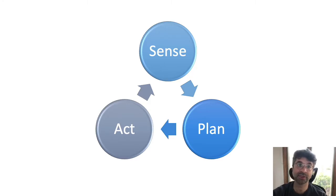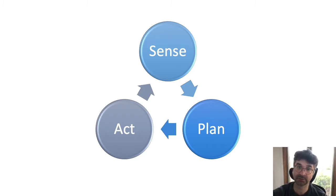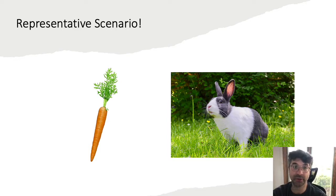To understand why agriculture is an amazing application domain for robotics, let's go back to the very basics. When robotics researchers design robotic systems they often think about sense, plan, and act components which operate in a cycle. In our representative scenario there is a carrot and a rabbit, and the goal of the rabbit is to eat the carrot.